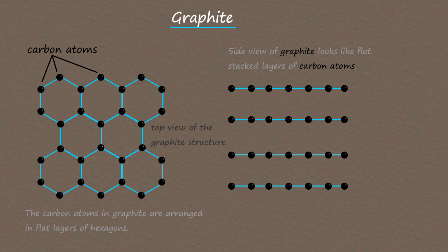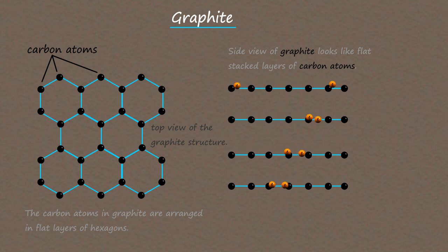Carbon is in group 4 of the periodic table and obviously it should make four covalent bonds, since it has four valency electrons in the outer shell. But the carbon atoms in graphite only make three bonds. This means that there is one free or delocalized electron per carbon atom, and this delocalized electron is free to move from one carbon atom to the next in the flat layers of hexagons. This means that graphite is an electrical conductor, unlike diamond, which is an electrical insulator.